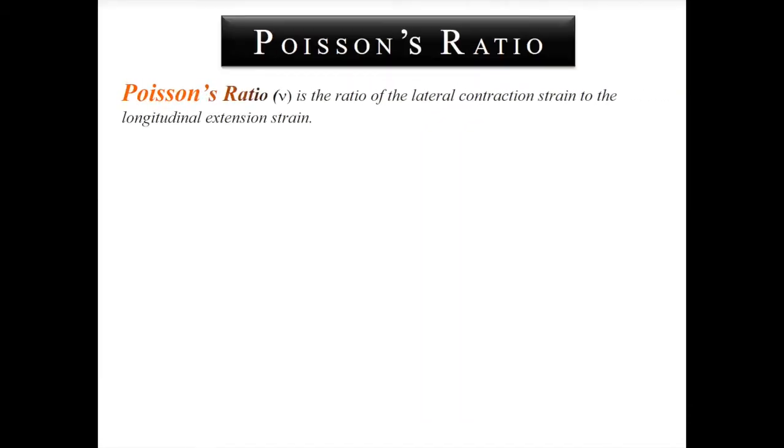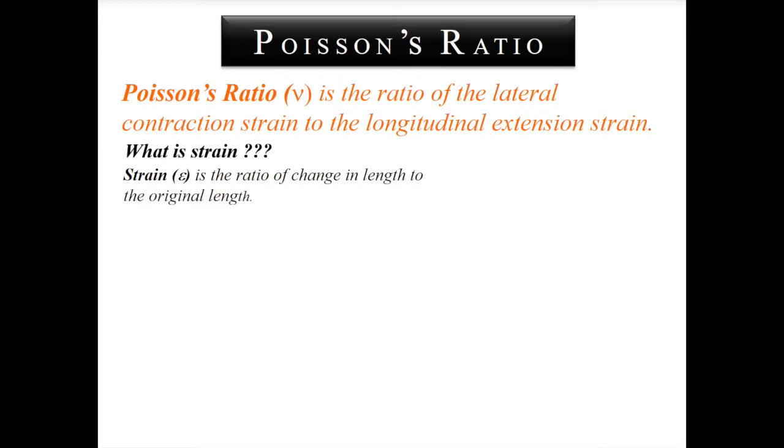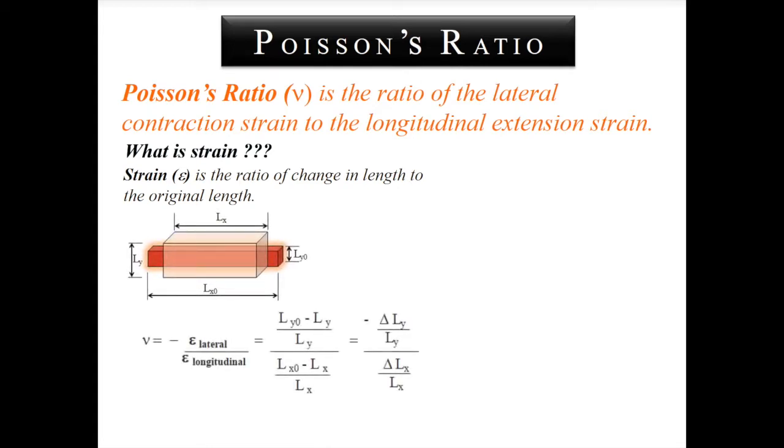Based on this, we can define Poisson's ratio as the ratio of the lateral contraction strain to the longitudinal strain. Now you might be thinking, what is strain? Well, strain, which is denoted by the Greek letter epsilon, is the ratio of change in length to the original length. Combining these two definitions, we can derive the formula for Poisson's ratio, which is denoted by the Greek letter mu, and is equal to the ratio of negative lateral strain to longitudinal strain.